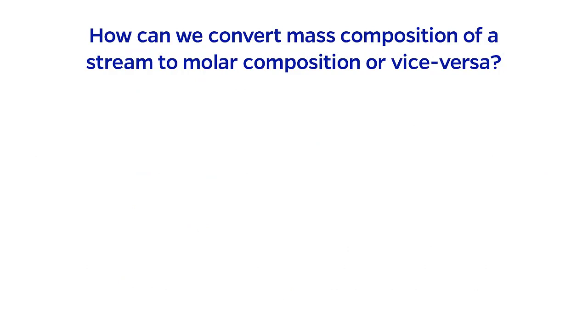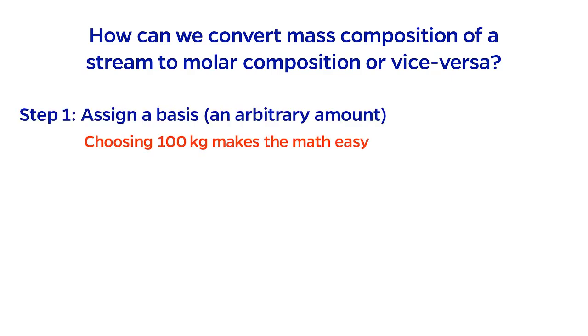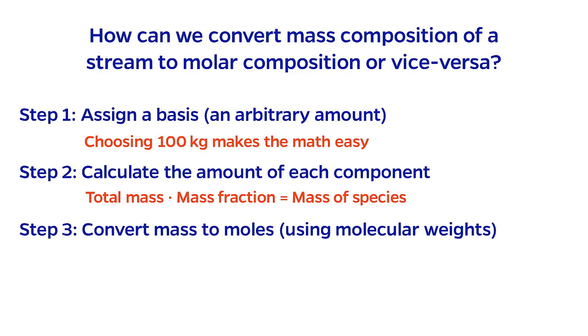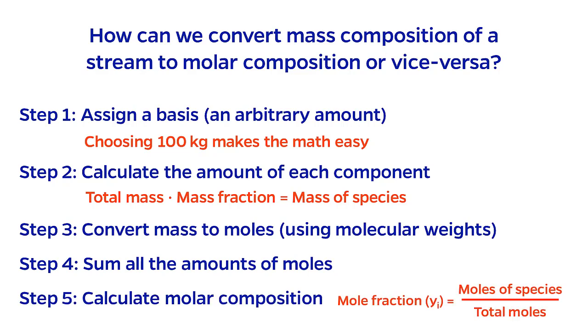What happens if we have the mass composition of a stream, but we desire the molar composition, or vice versa? In this case, the procedure is first to assign a basis. A basis is another concept that we'll come back to later, but for now just understand that it means any arbitrary amount. I love to use 100 kg for my basis because it makes the math so much easier. Then we convert the composition to an amount using the formula discussed earlier. Then convert the mass of each species to moles of each species. Finally, we can add all the molar amounts to obtain the total moles. Then divide the individual molar amount by the total amount to calculate the composition of each component. The entire process works the same in reverse.